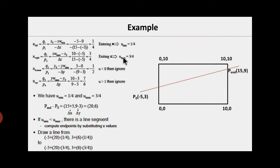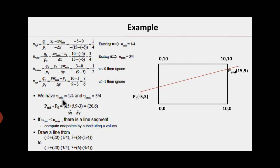We have two u values being ignored and two being considered. So u_min = 1/4 and u_max = 3/4. Since 1/4 < 3/4, u_min < u_max, which confirms the line is intersecting the window. The line intersects the clip window at u = 1/4 and u = 3/4. We now find the x and y coordinates at these u values.